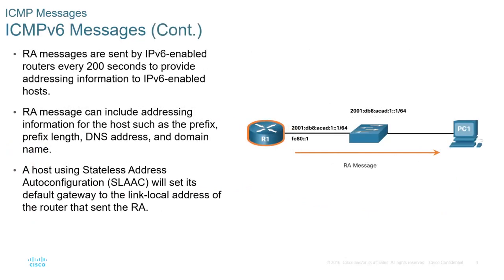Router Advertisement messages are sent by IPv6-enabled routers every 200 seconds to provide addressing information to IPv6-enabled hosts. A Router Advertisement message can include addressing information such as the prefix, prefix length, DNS address, and domain name. A host using Stateless Address Auto-Configuration, SLAAC, will set its default gateway to the link-local address of the router that sent the RA.